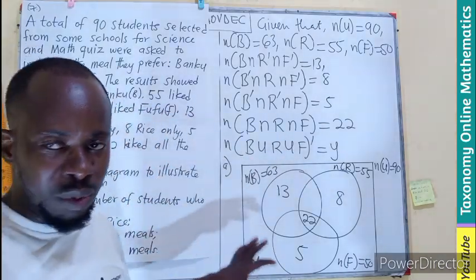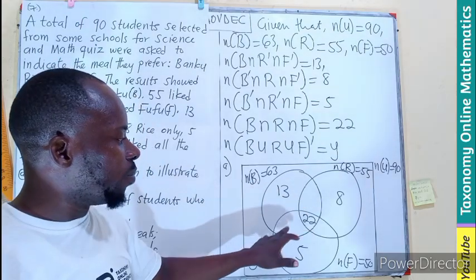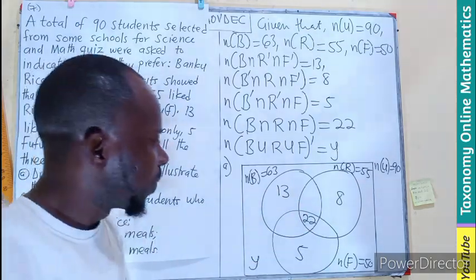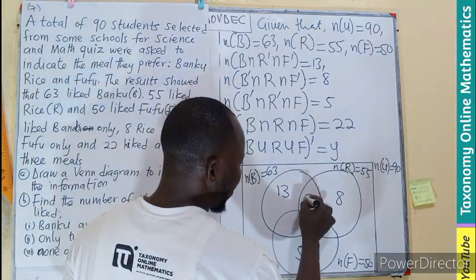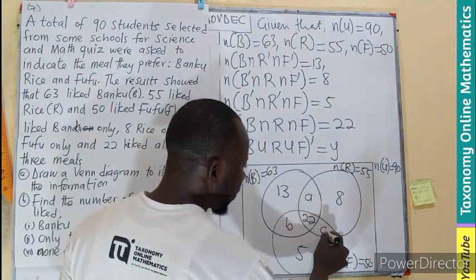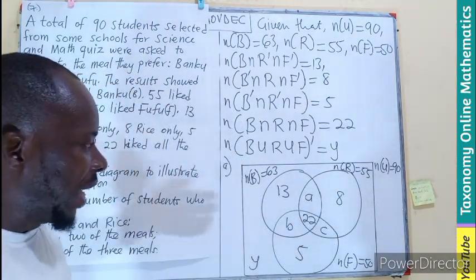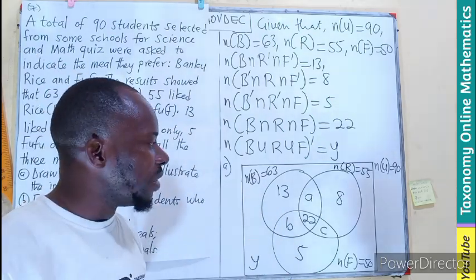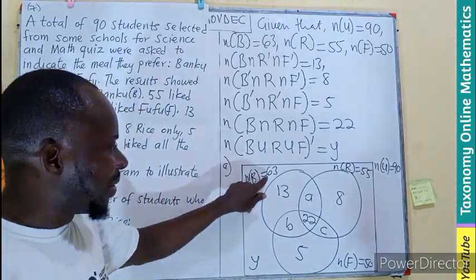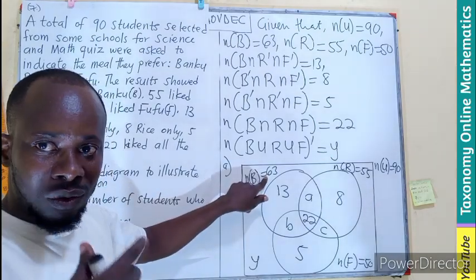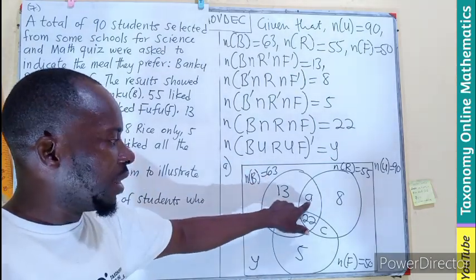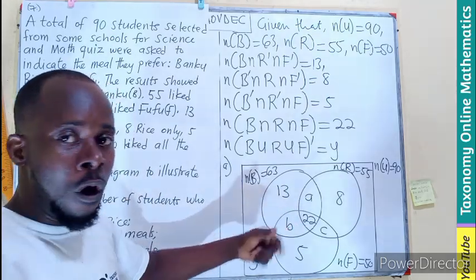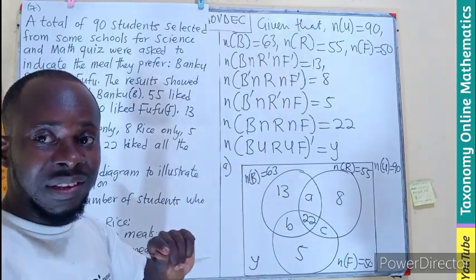These are the information provided in the question. The empty spaces are showing areas we must find, so I'm going to label them A, B, C. We need to find the values for those places. Remember, the 63 here is comprising of four regions that sum up to give you 63.